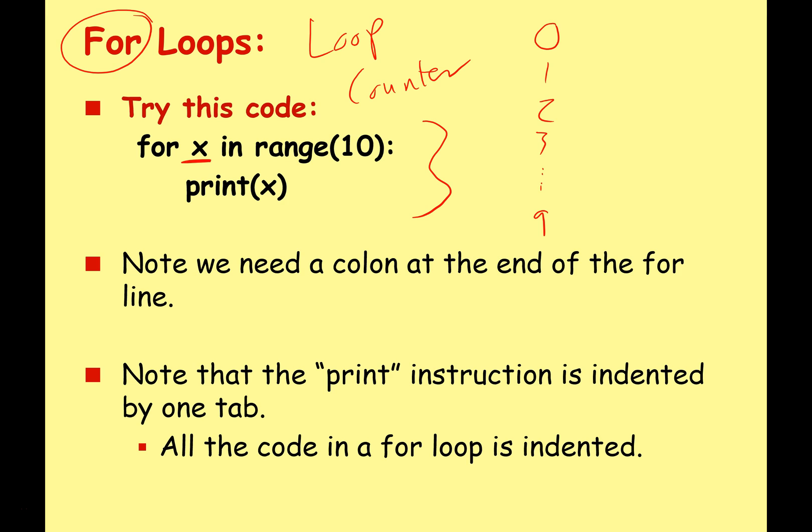So for x in range 10, the computer will start counting at 0 and it'll stop 1 less than the number in the brackets. So I want to print 0 to 9. I need to say for x in range 10 because that will start at 0 and then it will get as far as 9. When it gets to 10 it will stop and exit out of the loop and continue with the rest of the program.